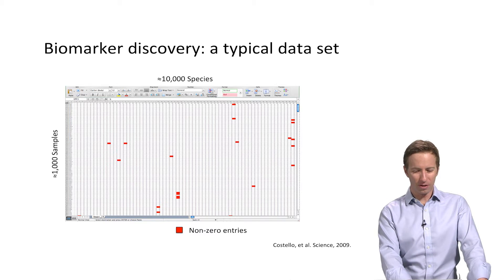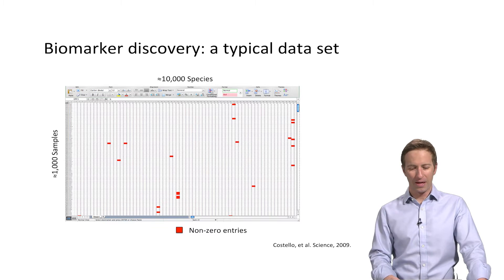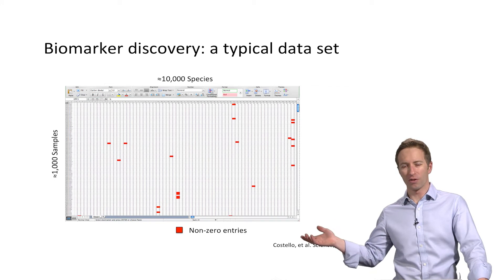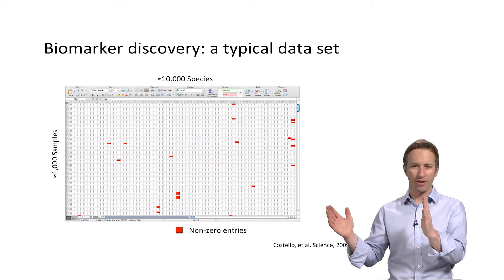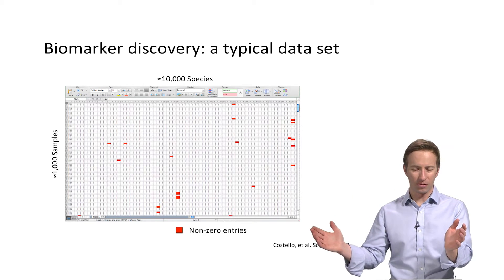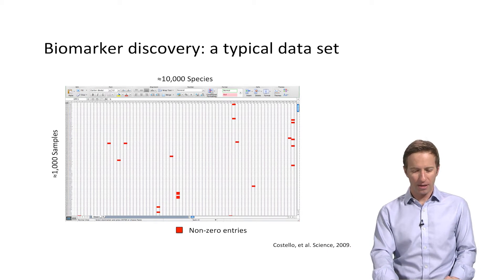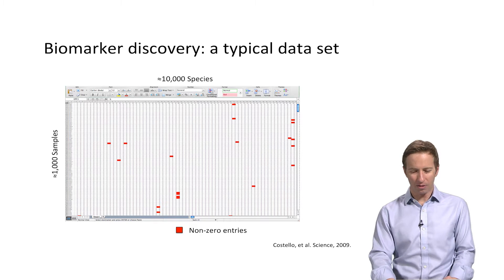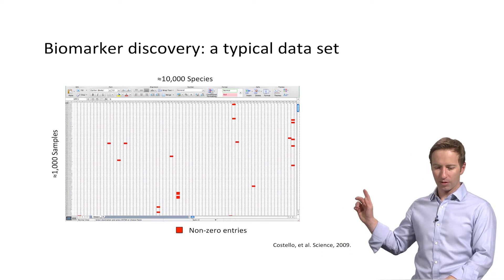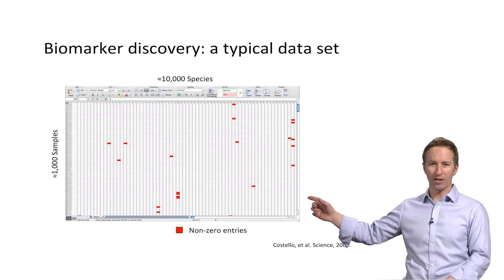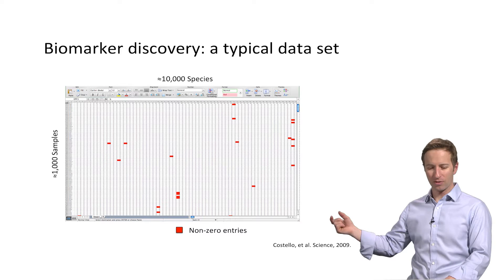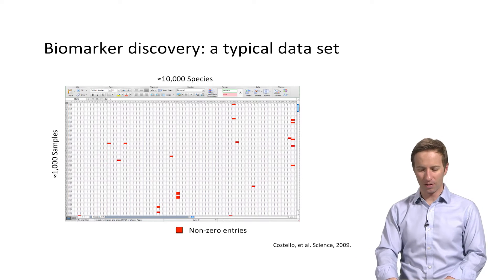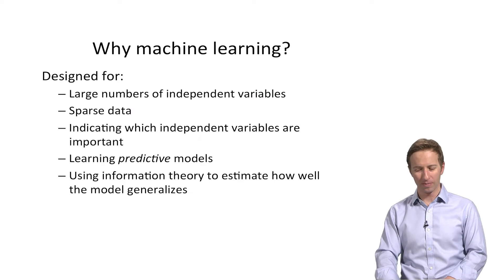So we want to figure out sets of species or genes that are predictive of some clinical state or some environmental state of the community. And when you look at a typical microbiome data set you might have a few hundred or if you're lucky a thousand samples and then it's often very high dimensional. So we get thousands of OTUs for example. And that goes along with being sparse. So here's a little screen capture of the first fraction of a file in Excel and I've colored the non-zero entries red. So you can see that most of the entries are zero and this is actually very typical of a microbiome data set.